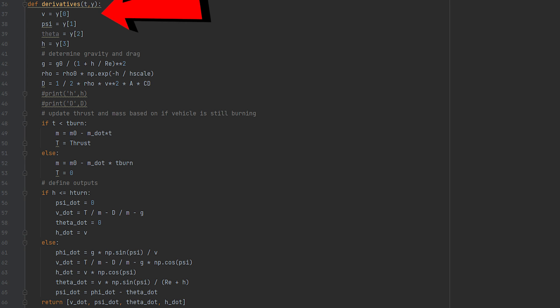Then we define our differential equations, starting by pulling out the current answers from the vector that contains the solution. Then we define the gravity, g, and the air density, rho, based on the altitude, and the drag force, d, based on the velocity and air density. Here we set the thrust if the time is less than the burn time that we defined. If not, it's zero. The mass of the rocket is also defined here.